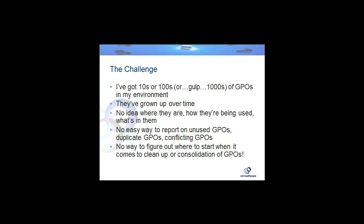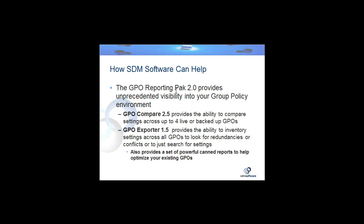That's where we come in. How do you figure out how to clean up and consolidate some of these GPOs? We developed a Group Policy Reporting Pack, now in its 2.0 version, to provide unprecedented visibility into your group policy environment. We've got GPO Compare 2.5, which provides the ability to compare settings across up to four live or backed-up GPOs. And then the product I'm going to show you in this video is GPO Exporter 1.5.